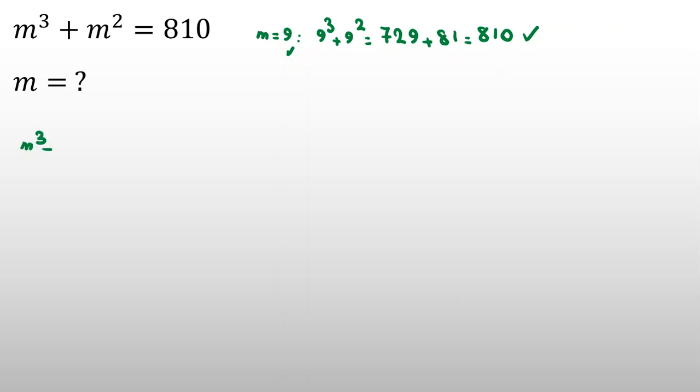Now, if I take all things to one side, m cubed plus m squared minus 810 equal to 0, and because m9 is one answer, so you can factorize, and one factor is m minus 9.